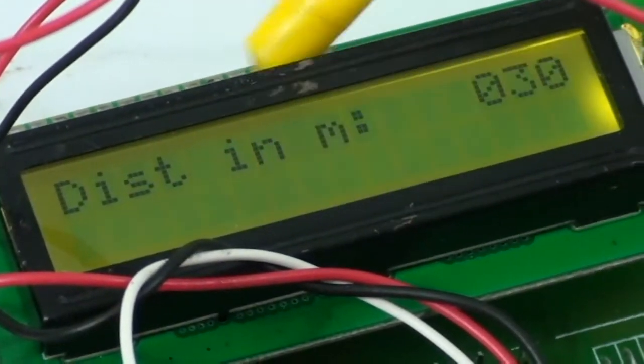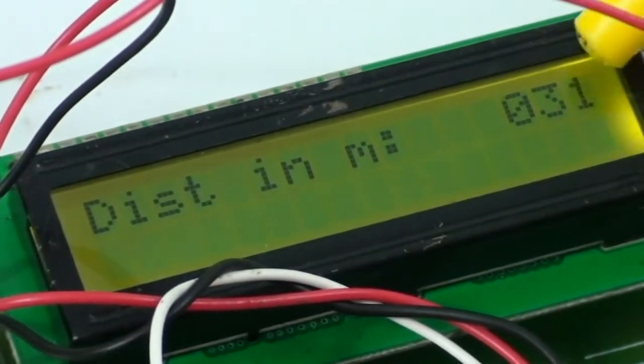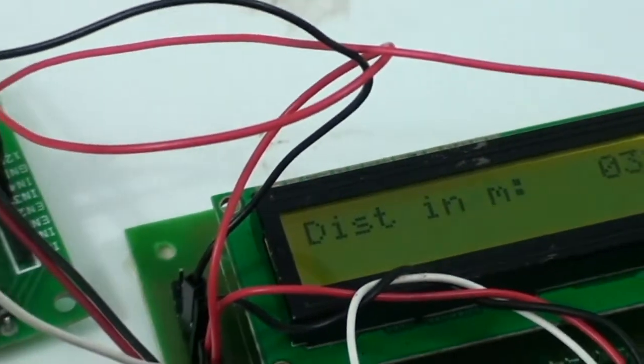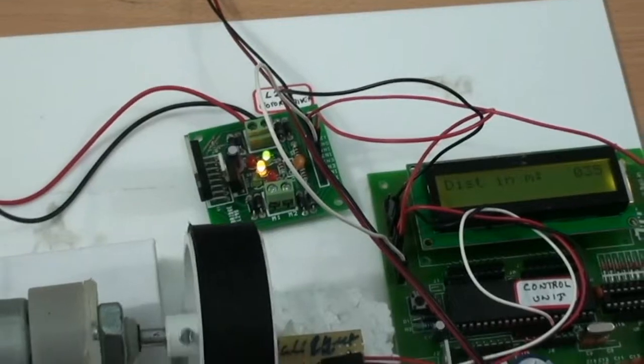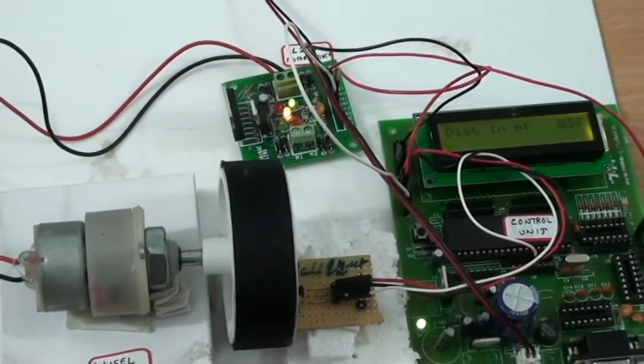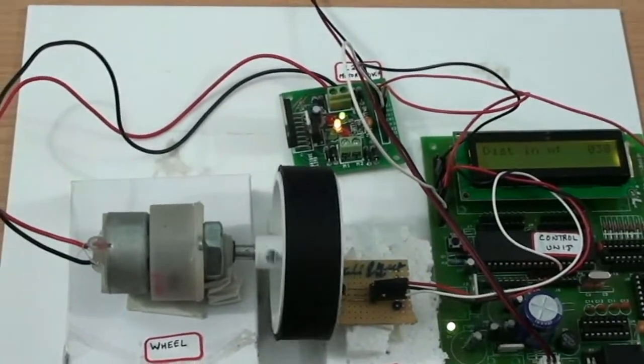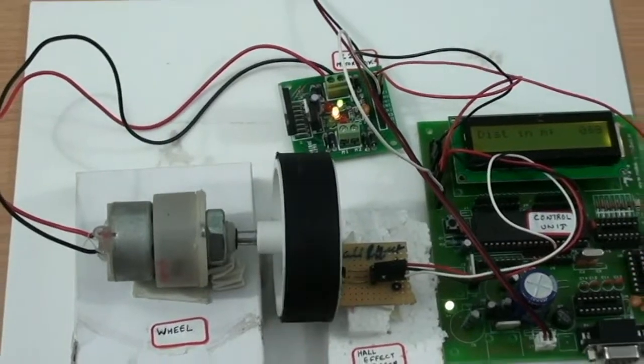You can see here the distance is shown in meters. This is how this works. The application of this project is mainly it is used in taxis to find out the distance traveled. Thank you.